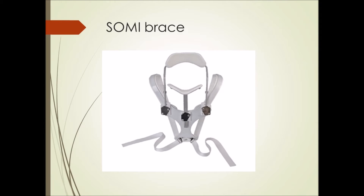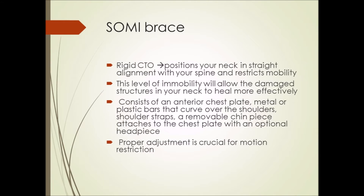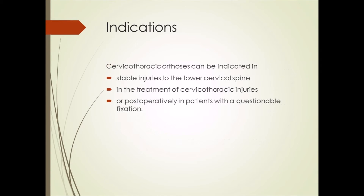The sternoccipital mandibular immobilizer (SOMI) is an example of a rigid cervical thoracic orthosis, which maintains alignment of the cervical and thoracic spine and prevents mobilization thereof. This level of immobility allows the damaged structures to heal. The SOMI brace has an anterior chestplate extending to the xiphoid process as well as a metal or plastic base that curves over the shoulders. An occipital component attaches to the chestplate as well as a chin piece which can be removed for eating. The cervical thoracic orthosis can be indicated in stable injuries to the lower cervical spine, treatment of cervical thoracic injuries, or post-operatively in patients with questionable fixation.